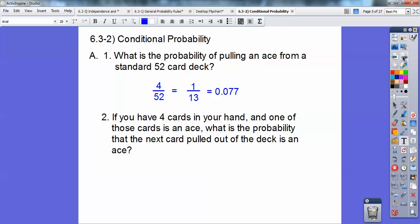If you have four cards in your hand, and one of those cards is an ace, what's the probability that the next card pulled out of the deck is an ace? Now remember, there's four cards in your hand, so there's 48 cards left in the deck. One of those cards in your hand is an ace, so there's three aces left out of 48 left in the deck, or 1/16, or 0.0625.